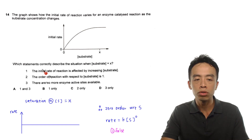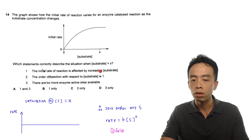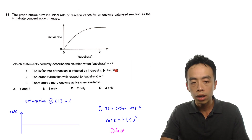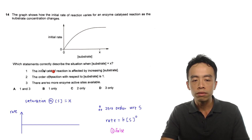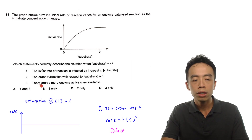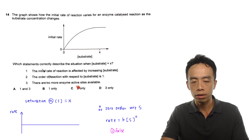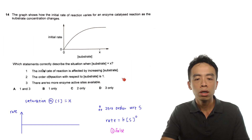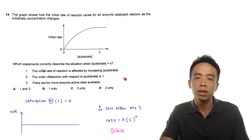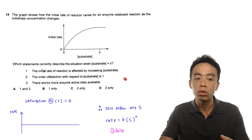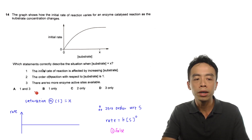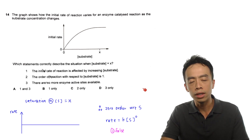Statement one: the initial rate of the reaction is affected by increasing concentration of substrate. Statement two: the order of the reaction with respect to substrate is one. Statement three: there are no more enzyme active sites available. We want to decide which of these statements are true, then compare options A, B, C, and D.